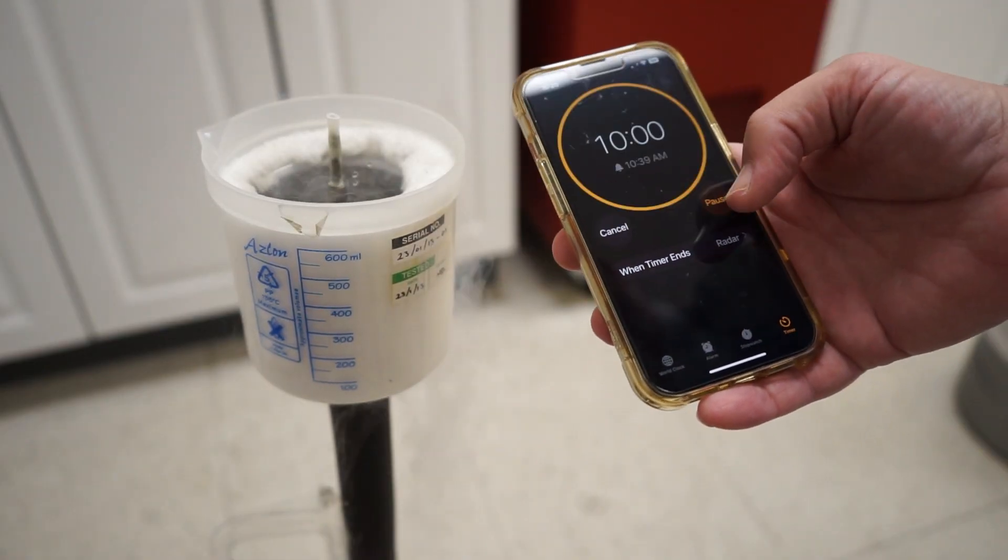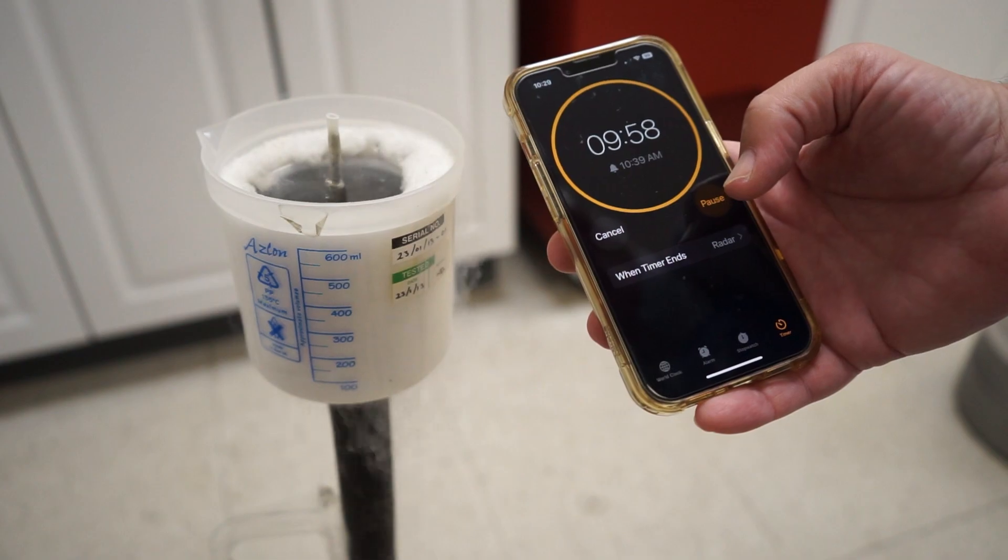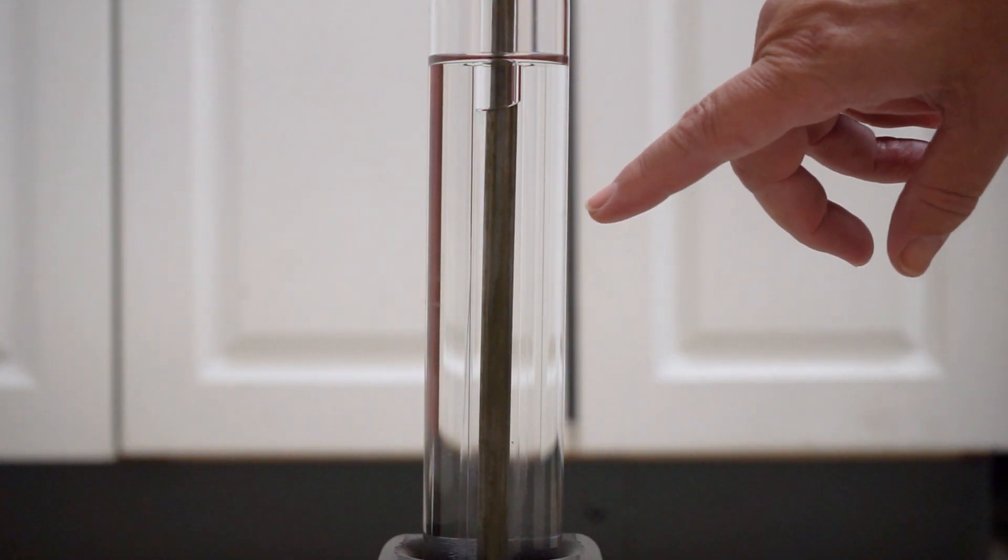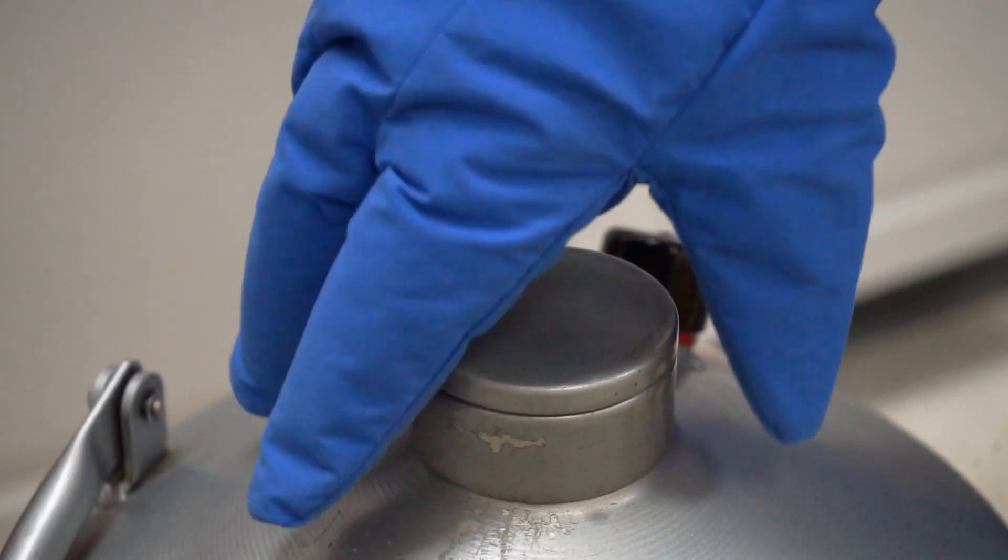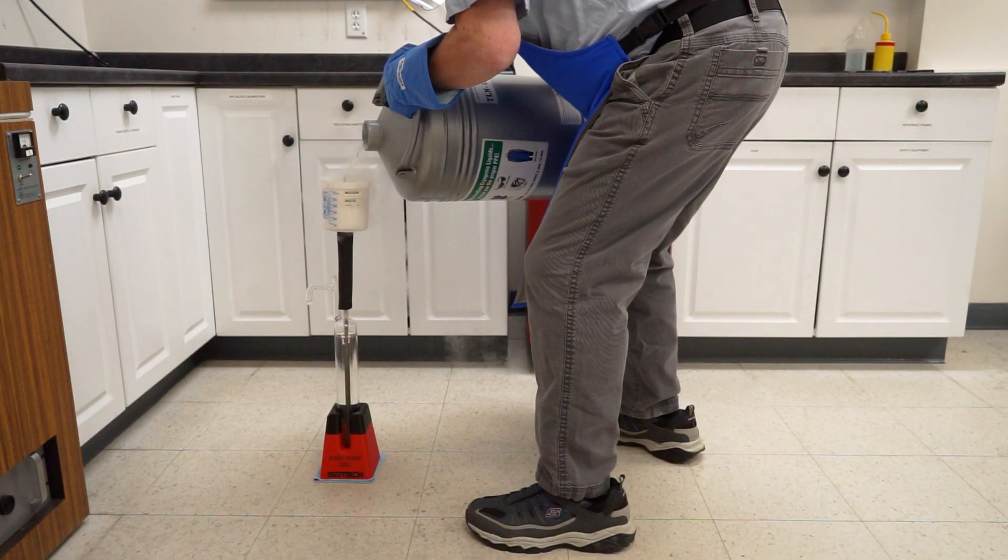It is possible that ice can begin forming as soon as the first pour, so be on the lookout for that as well. After 10 minutes has passed, we can refill the mantle maker with liquid nitrogen.